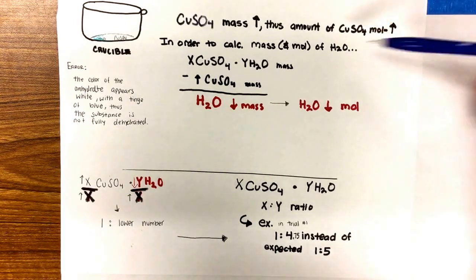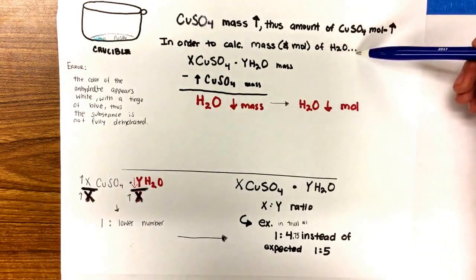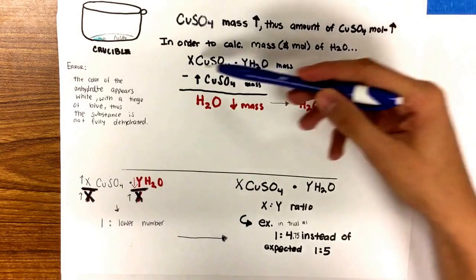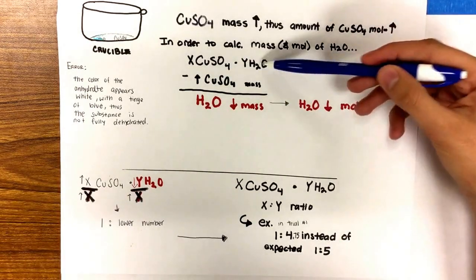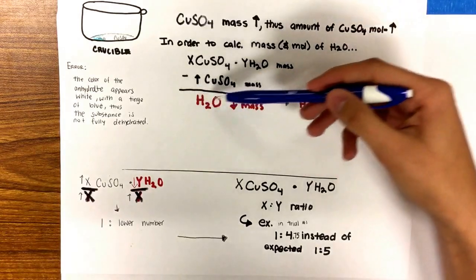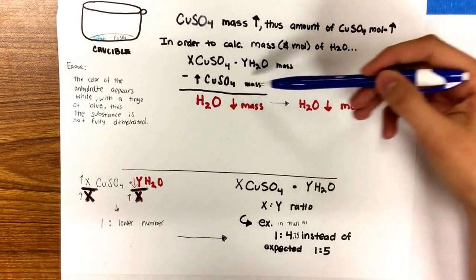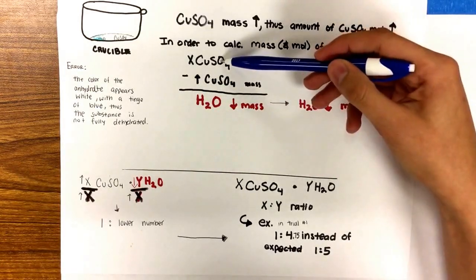In order to calculate the mass and then the moles of water, you would need to get the overall mass of the hydrate and then subtract the CuSO4 mass from that.